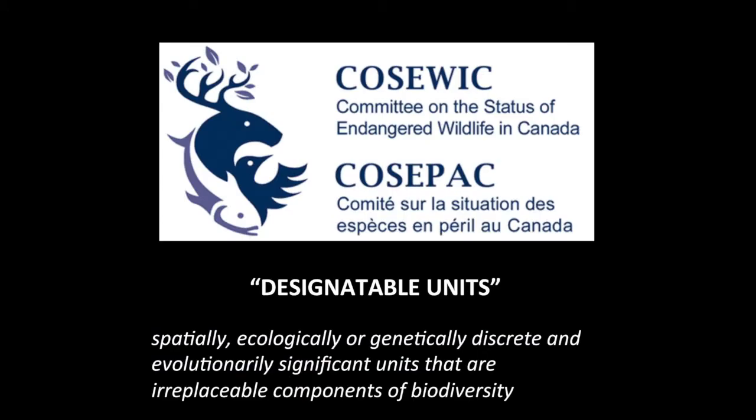We named this thing the very sexy name of 'designatable unit,' and in a phrase, it is spatially, ecologically, or genetically discrete and evolutionarily significant units underneath the species level. These are irreplaceable components of biodiversity. The notion is that if you identify those units and give them each a separate status, it is an acknowledgement that if one or more of those units were to disappear, that would be a devastating loss to the diversity of that species.